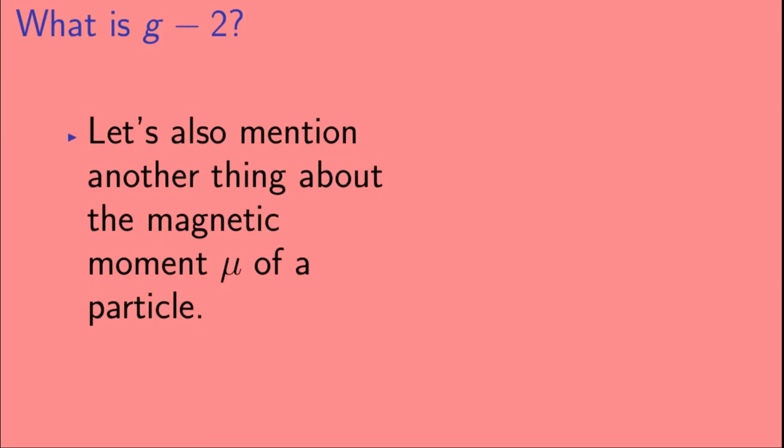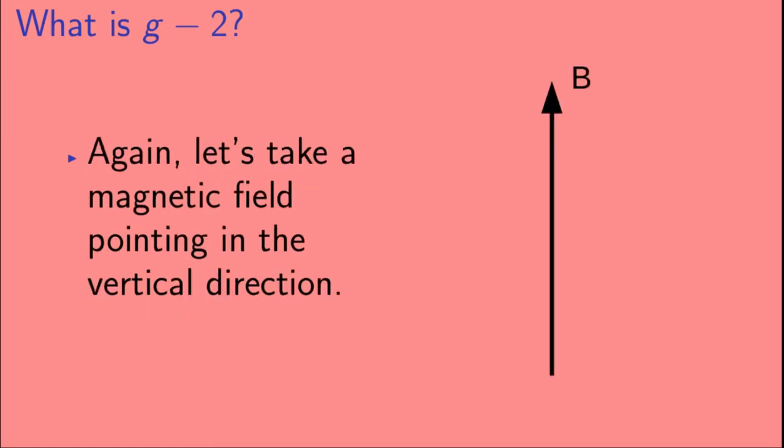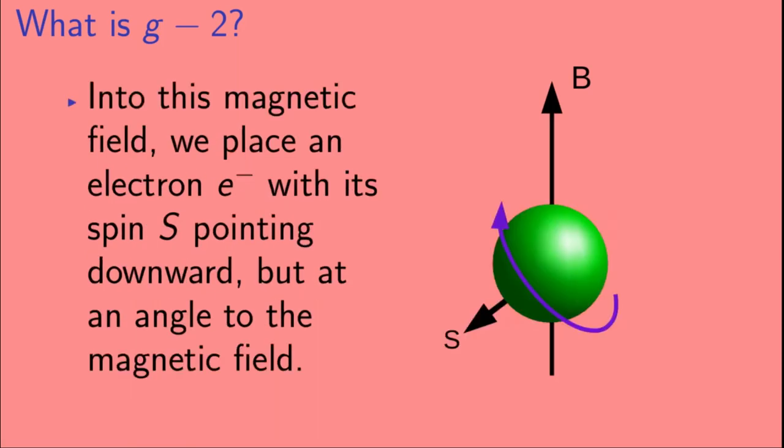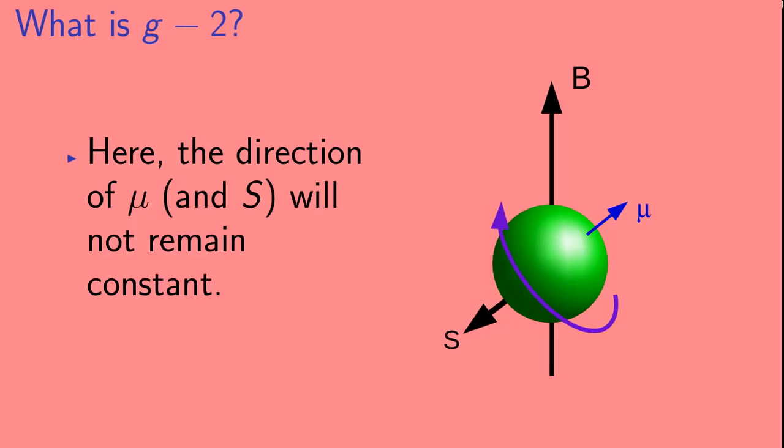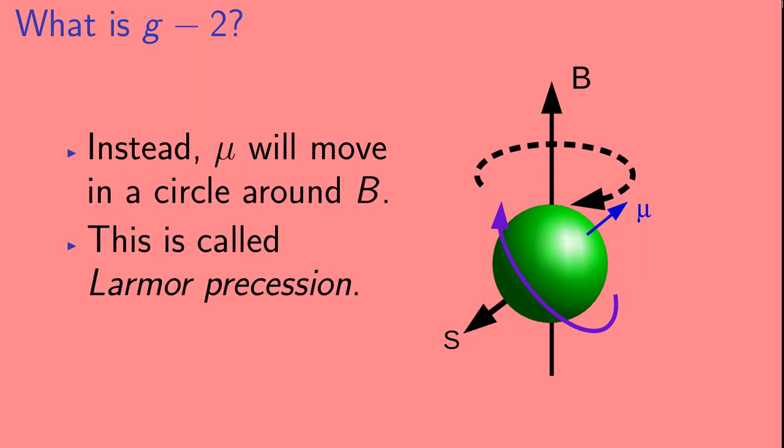So now let's also mention one other thing about the magnetic moment mu of a particle. Again, let's take a magnetic field pointing in the vertical direction. Into this magnetic field, we're going to place an electron with its spin, s, pointing downward, but at an angle to the magnetic field. Because the electron has negative charge, its magnetic moment mu points in the direction opposite to the spin, s. So if we do this, the direction of the magnetic moment mu, and therefore also the direction of the spin, s, will not remain constant. Instead, the magnetic moment will move in a circle around the magnetic field B. This is called Larmor precession.